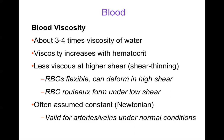So that's why blood has a shear-dependent viscosity because of the red cells. Often in modeling, blood is assumed to be a Newtonian liquid, meaning it has a constant viscosity. This assumption is generally valid for arteries and veins under normal conditions, so we can normally assume blood is a Newtonian fluid.